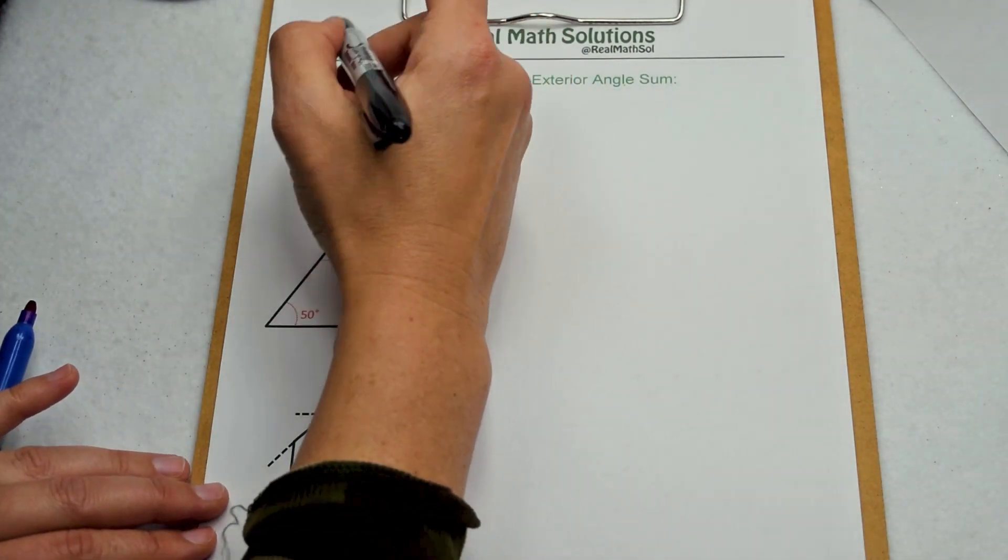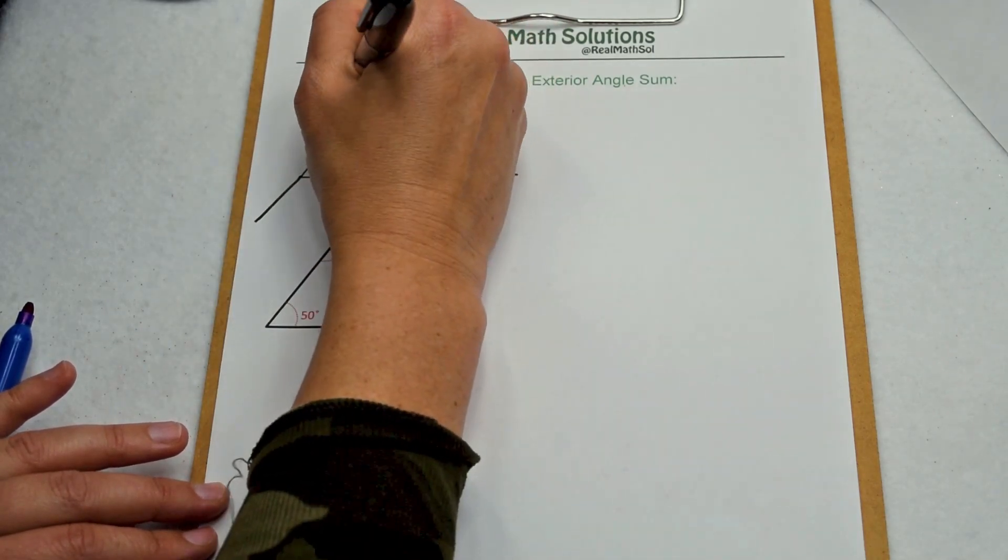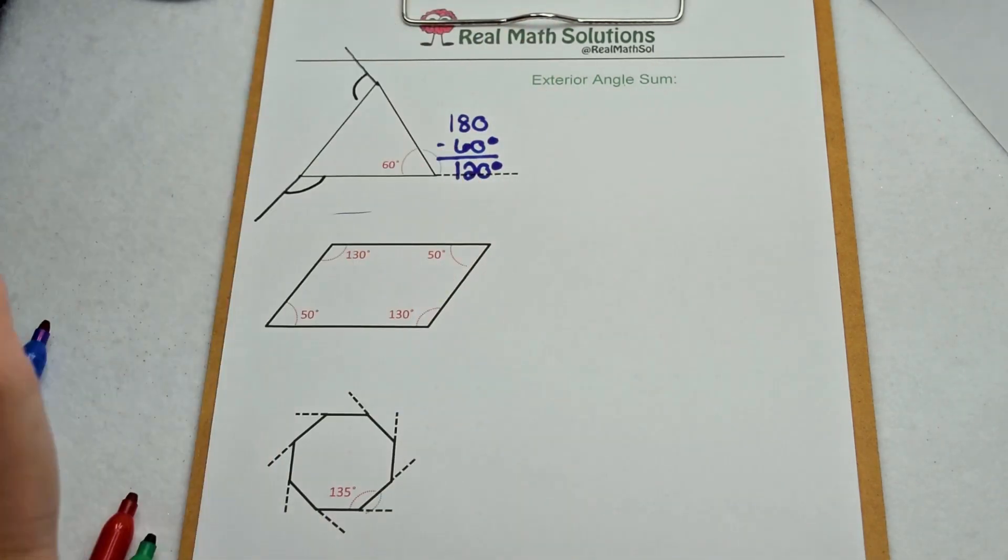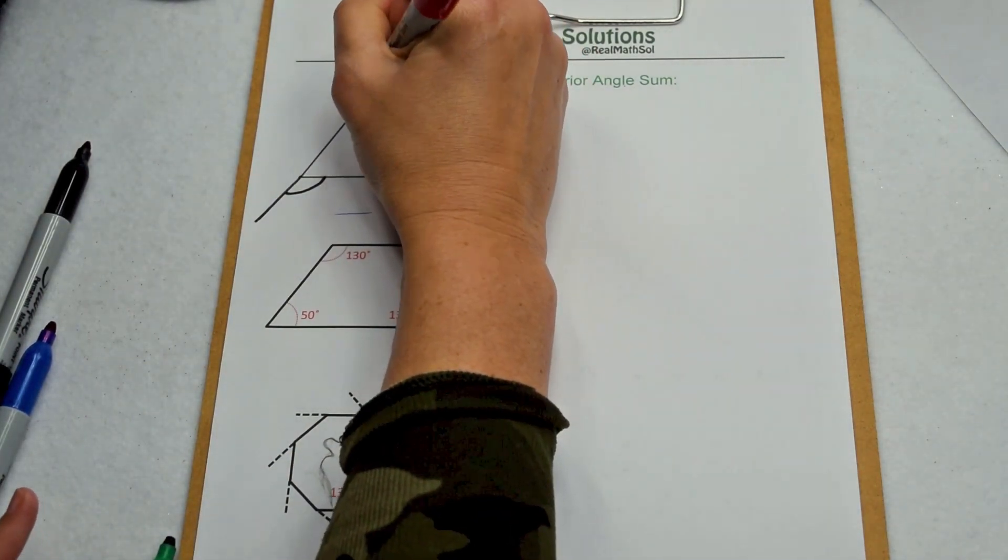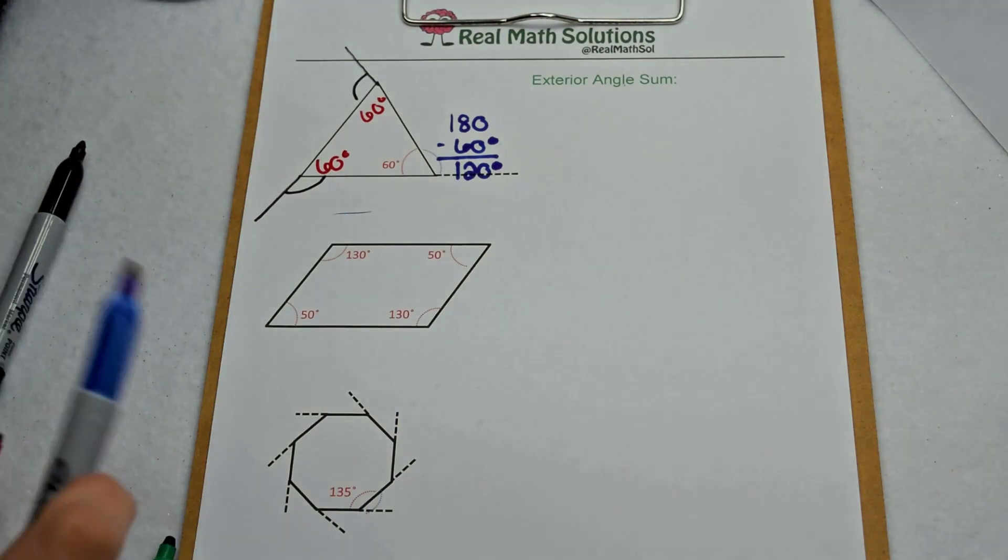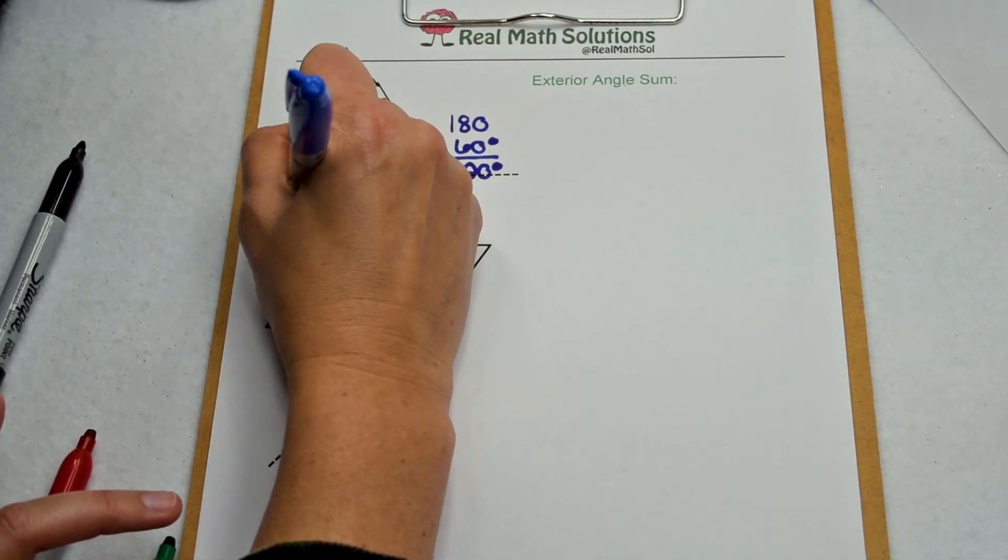To find our other exterior angles, we can rotate counterclockwise through our figure. When we do, that'll show us where our other exterior angles are. Since this is a regular equilateral triangle, we know our other two interior angles are also 60 degrees. That means our other exterior angles are also going to be 120 degrees.